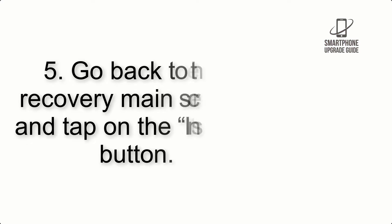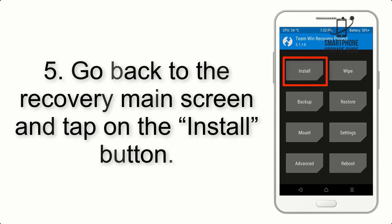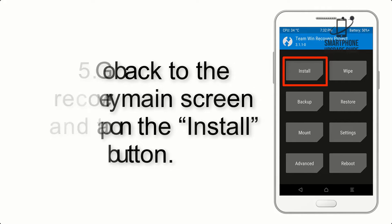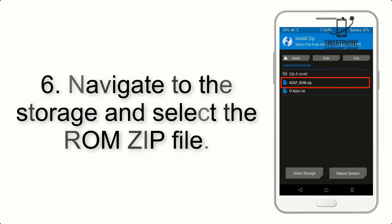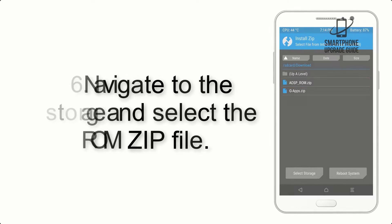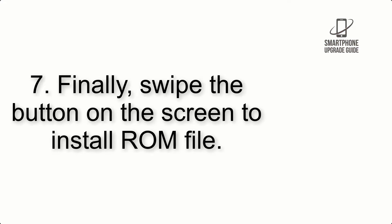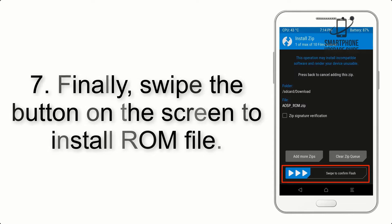Step 4: Swipe the button to wipe the device. Step 5: Go back to the recovery main screen and tap on the Install button. Step 6: Navigate to the storage and select the ROM zip file.